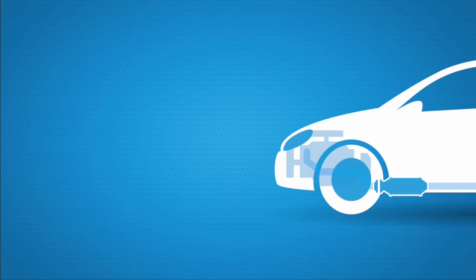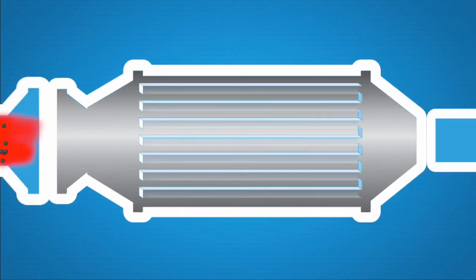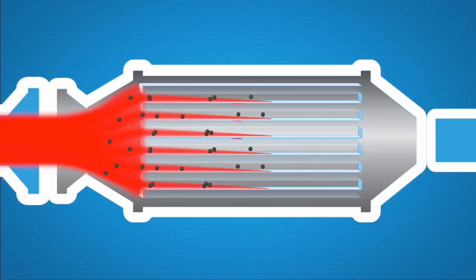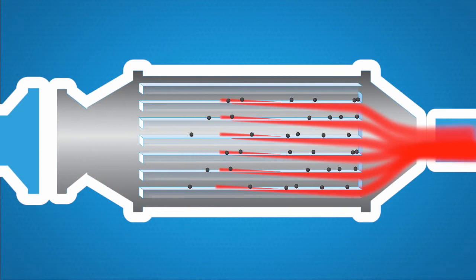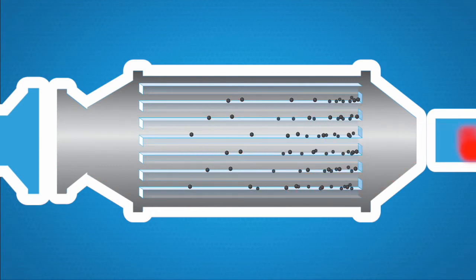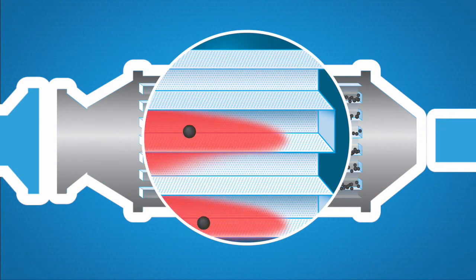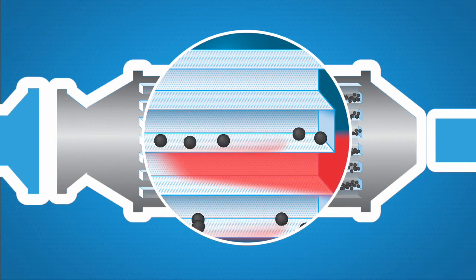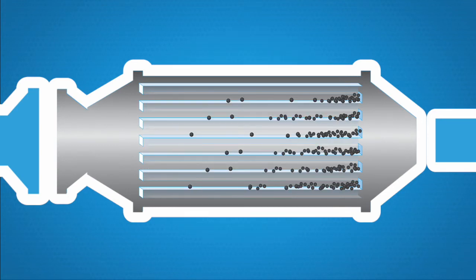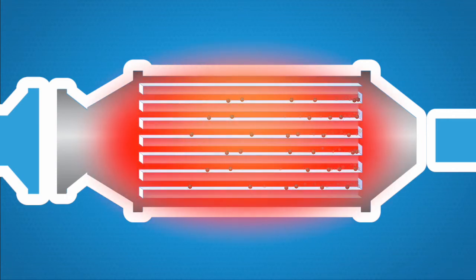How it works: A diesel particulate filter is fitted as closely as possible to the engine in the exhaust system. When the exhaust gases flow through the diesel particulate filter, the soot particles are trapped, while the other elements of the exhaust gas are emitted through the porous walls of the filter. The soot particles collect in the filter, and the collected particles must be burnt to keep the filter clean.